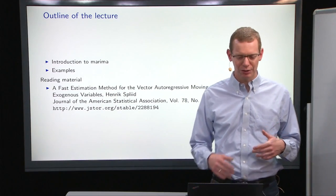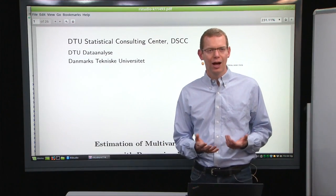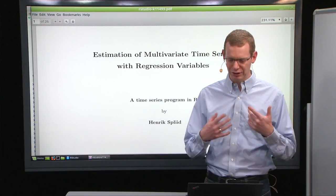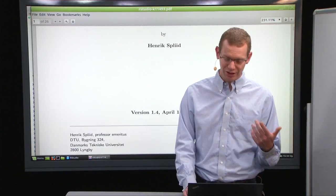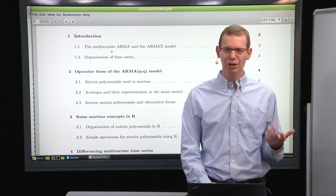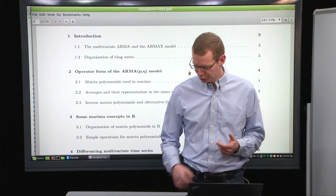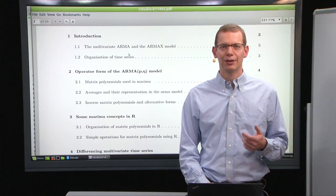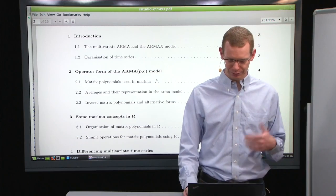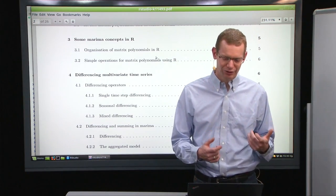I want to spend most of the time focusing on that. To explain how the MARIMA model works, I will do two things: first, look through this document, which is the vignette that comes with the MARIMA package in R — it shows you an example — and then as an exercise I will guide you to another example. We can work with multivariate ARIMA and ARIMAX models. It's a little bit picky about how to organize data. We're talking about the operator form, which we also used in other places in the course.